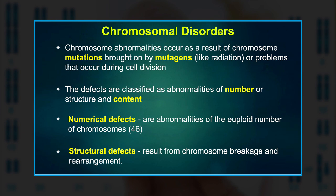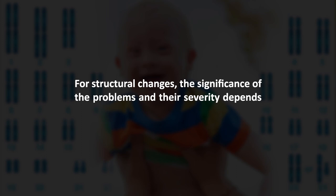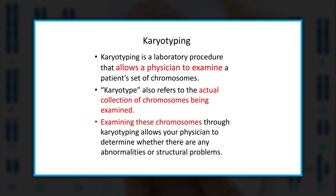Chromosomal abnormalities include both numerical changes — a change in the number of chromosomes — and structural changes. Anything other than a complete set of 46 chromosomes represents a change in the amount of genetic material and can cause health and developmental problems. For structural changes, the severity depends upon which chromosome is altered. A chromosomal karyotyping examines a person's chromosomes to determine if the right number is present and if each chromosome appears normal.